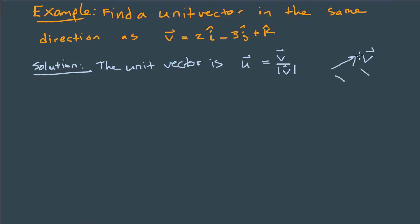Multiplying a vector by a positive constant like this, 1 over magnitude of v, does not change the direction. It only changes the length.